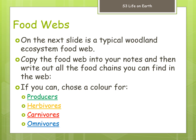On the next slide I'm going to show you a typical woodland ecosystem food web. Your task will be to copy out that food web and then write out all the food chains you can find in it. If you have colored pens or pencils, choose a different color for producers, herbivores, carnivores, and omnivores — for example, producers in green, carnivores in red — but if you don't have those colors, choose your own color code.